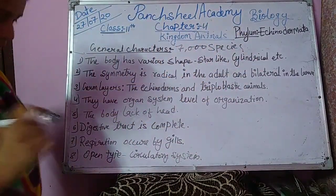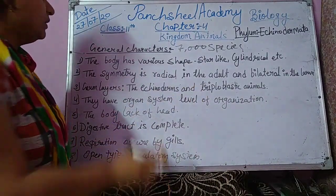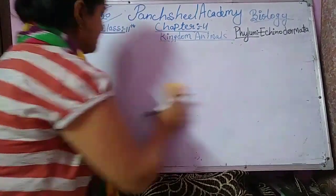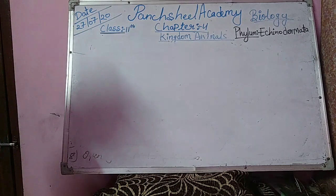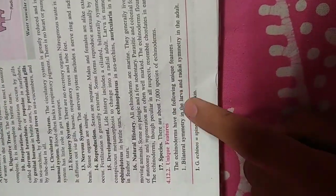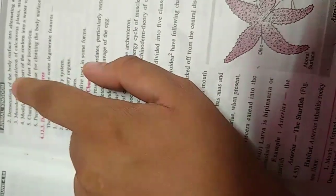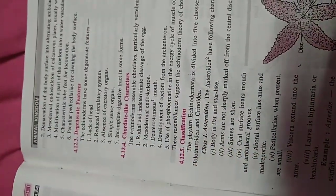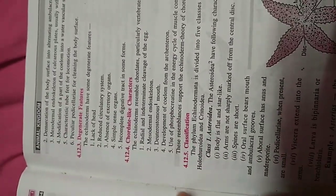Now we are discussing about the unique features of Echinodermata. Bilateral symmetry in the larva and radial symmetry in the adult. Demonstration of body surface into alternate ambulacral and interambulacral areas. Mesoderm endoskeleton of calcareous plates, usually bearing spines. Modification of part of coelom into the water vascular system.